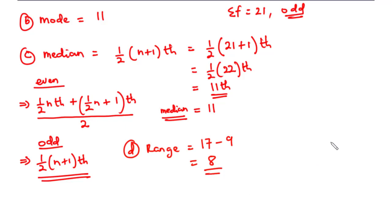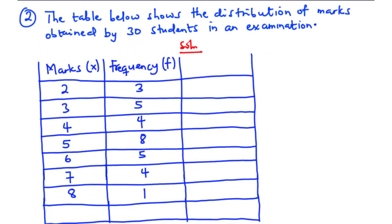Now let's take the second example. The table below shows the distribution of marks obtained by 30 students in an examination. We have the marks obtained by the students and the frequency — how many times each mark repeated itself. We are going to find the mean, mode, median and range for this distribution. First, let's find the summation of f. When you sum up all the frequency values, you get summation of f equal to 30.